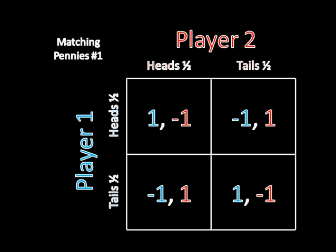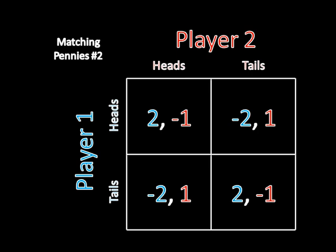Now let's look at this other game, which I'm calling matching pennies number two. You'll notice that all I've done here is multiplied player one's payoffs by two. So all of the ones became twos, and all of the negative ones became negative twos. If you pause and solve for the mixed strategy Nash equilibrium, you would quickly find that it's actually going to be the same equilibrium, where player one mixes with probability one-half between both of his strategies, and player two does likewise, going heads half the time and tails half the time.